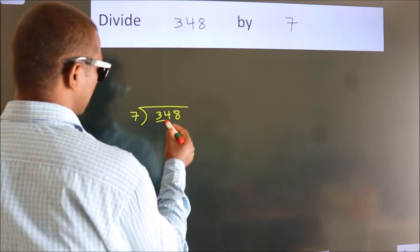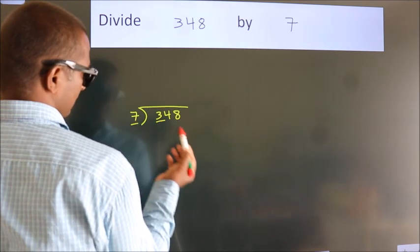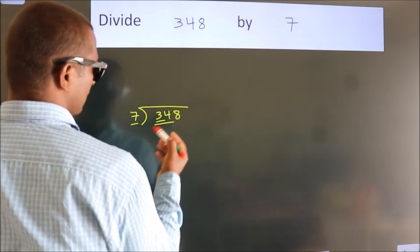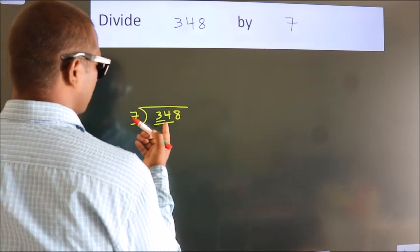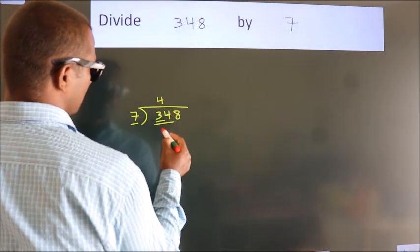Here we have 3. Here 7. 3 smaller than 7. So we should take 2 numbers. 34. A number close to 34 in the 7 table is 7 fours, 28.